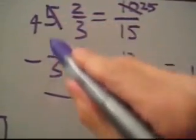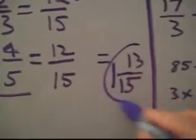And we can go ahead and write 13 fifteenths here. We take our 4, subtract our 3 to get 1 for a final answer of 1 and 13 fifteenths.